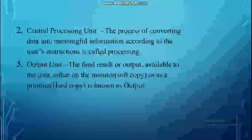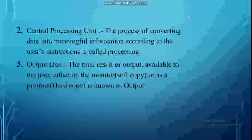The central processing unit processes and converts data into meaningful information according to the user's instruction — this is called processing. The final result or output is available to the user either on the monitor as a soft copy, or as a printout known as a hard copy.